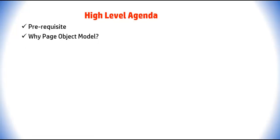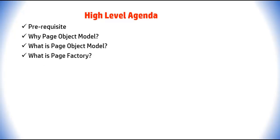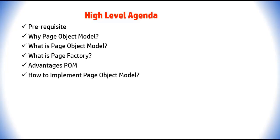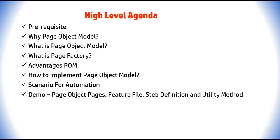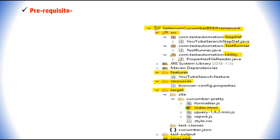For this tutorial, there is a prerequisite: go through the previous Selenium Cucumber BDD TestNG tutorial. Then we'll discuss why we need Page Object Model, what is POM, what is Page Factory, advantages of POM, and how to implement it. Then we'll discuss a simple automation scenario. In the demo we'll implement page object pages, feature files, step definition files, and the utility method.